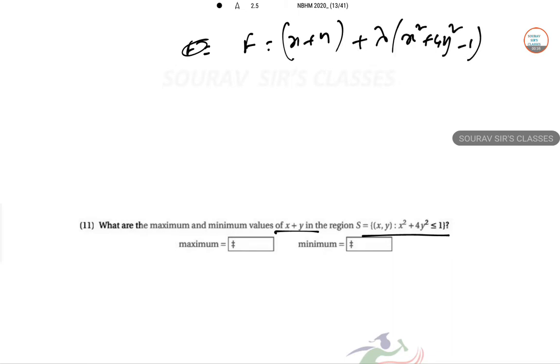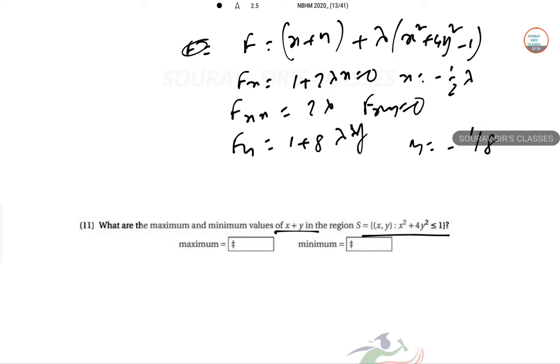For the critical points, we solve: fx equals 1 plus 2 lambda x equals 0, so x equals minus 1 over 2 lambda. fxx equals 2 lambda. fy equals 1 plus 8 lambda y, so y equals minus 1 over 8 lambda.